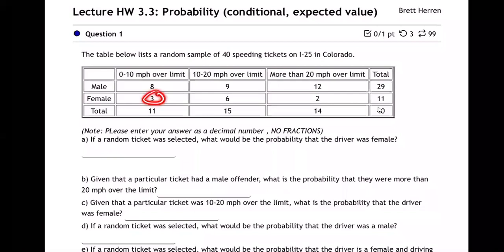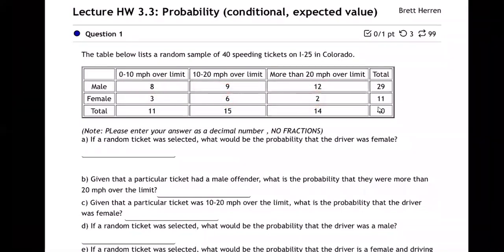This three here is three females were barely over the speed limit. Six females were 10 to 20 over. Two females were more than 20 over. The bottom row is all totals. The side column is all totals as well.